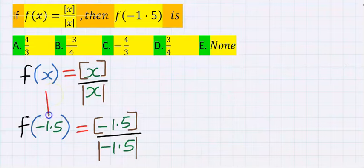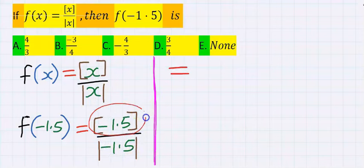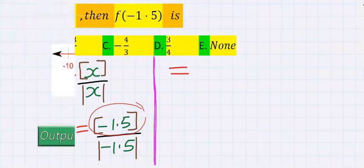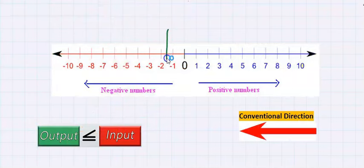Next, wherever I see x, I'm going to input minus 1.5 according to the question. That is, instead of x, I will have minus 1.5 in their positions. At the numerator, consider the greatest integer function of minus 1.5. Minus 1.5 is in between minus 1 and minus 2.